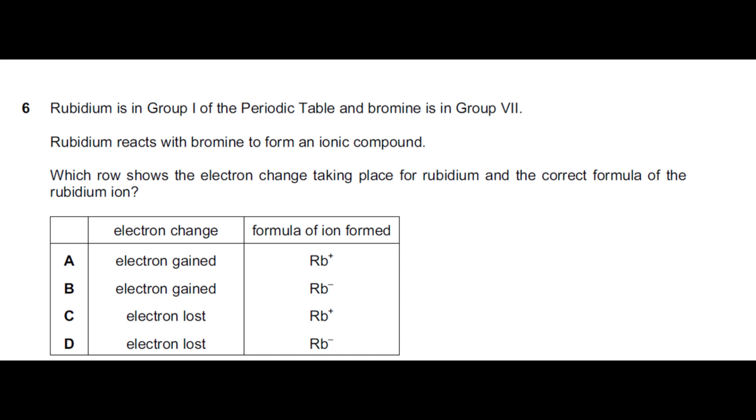Rubidium has a symbol Rb. As it belongs to group 1, losing 1 electron it should have a plus 1 charge. So our options Bravo and Delta are cancelled out, we have shortlisted our options which are Alpha and Charlie. Now we know that rubidium loses electrons, so Charlie is the correct answer for this question.